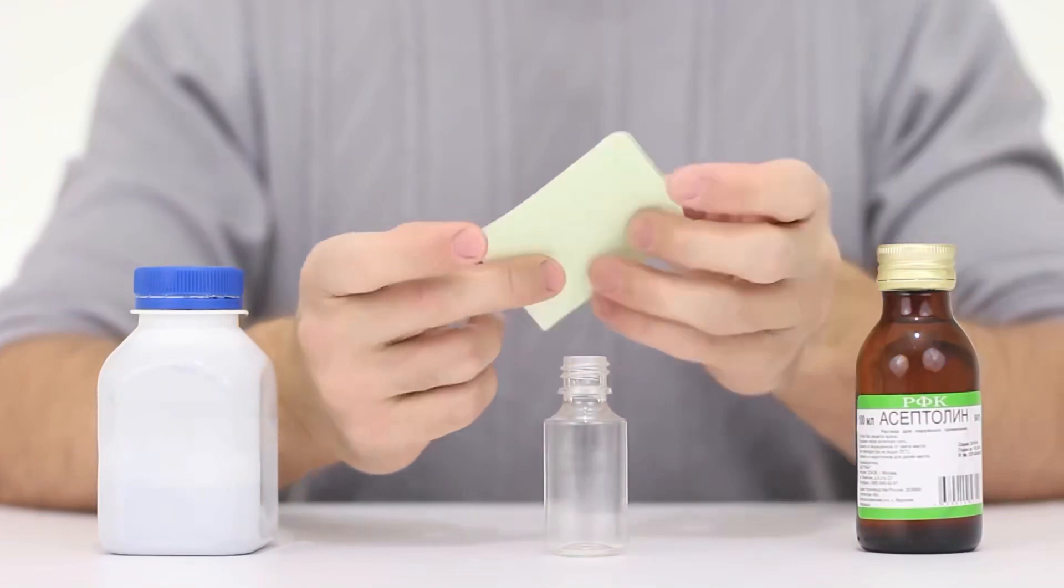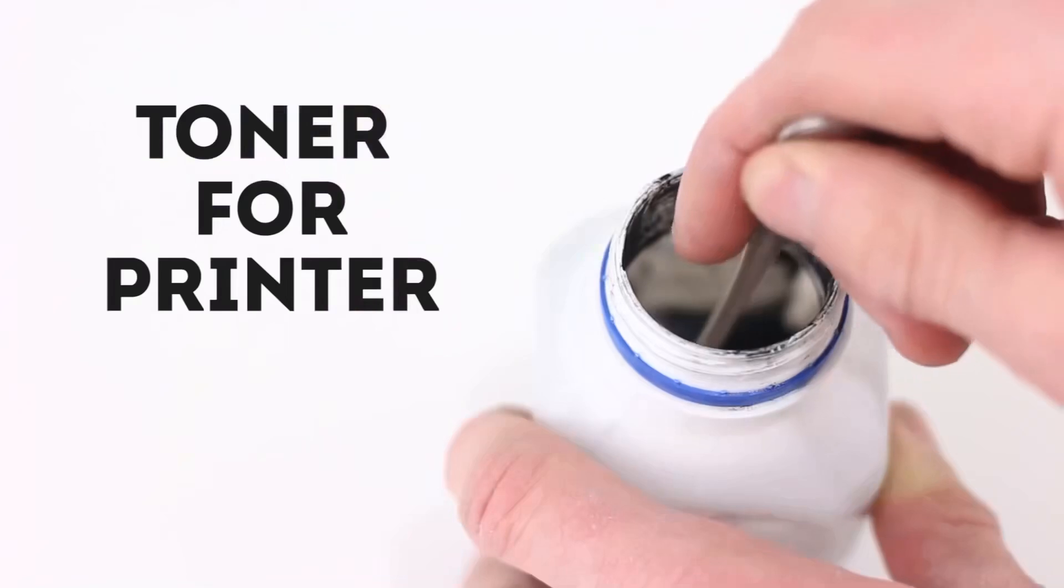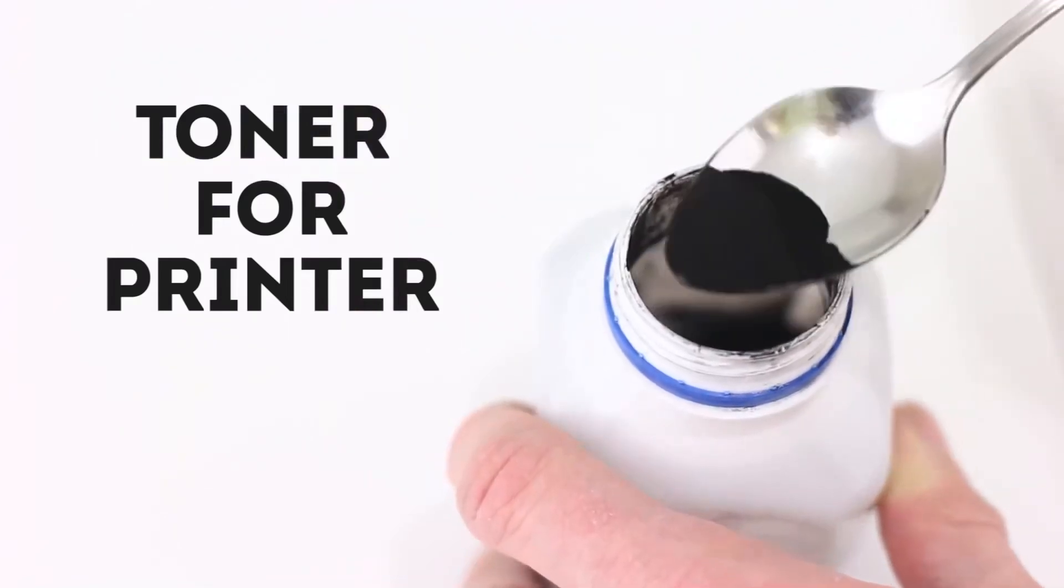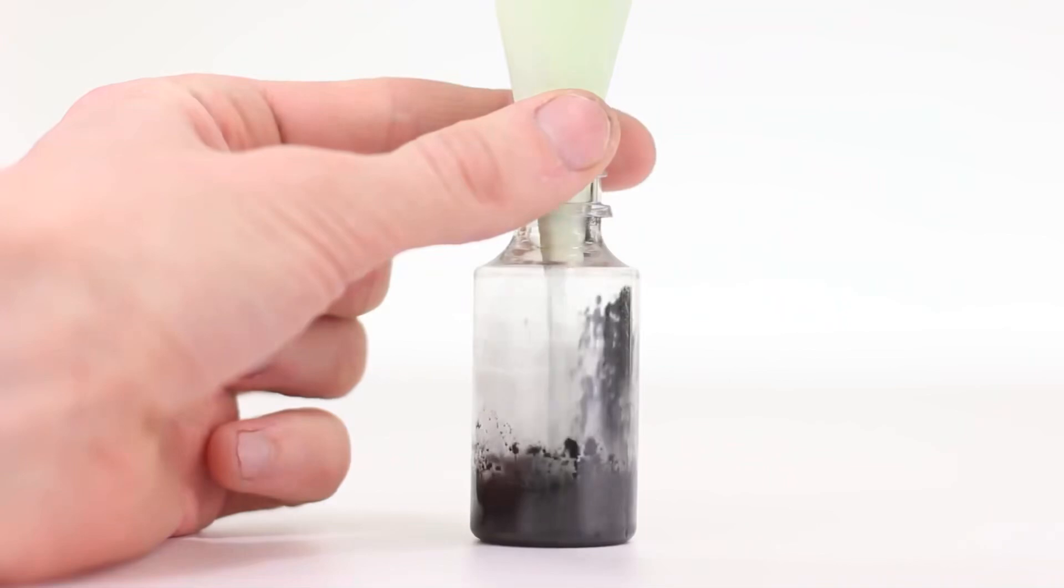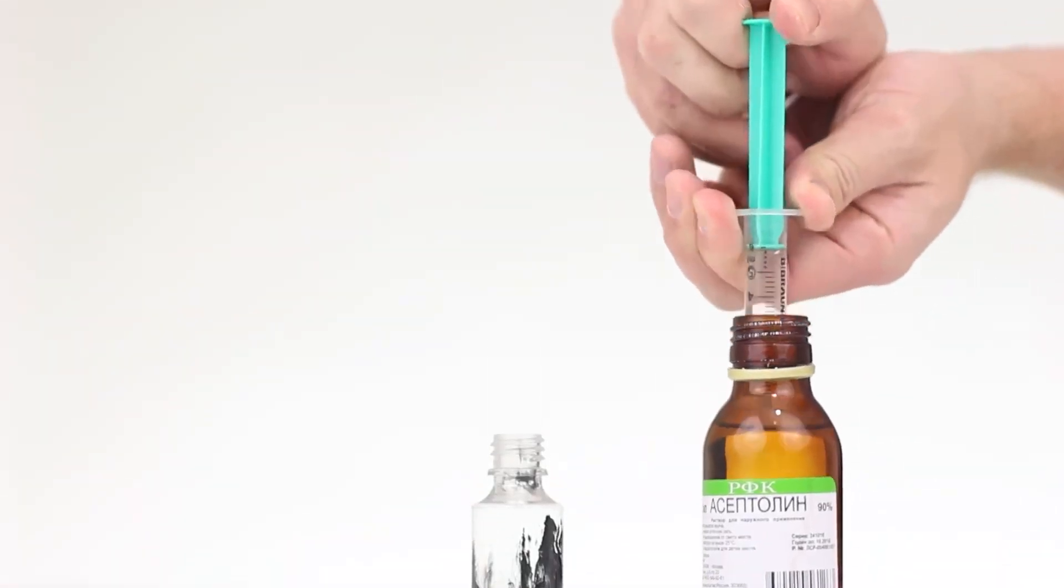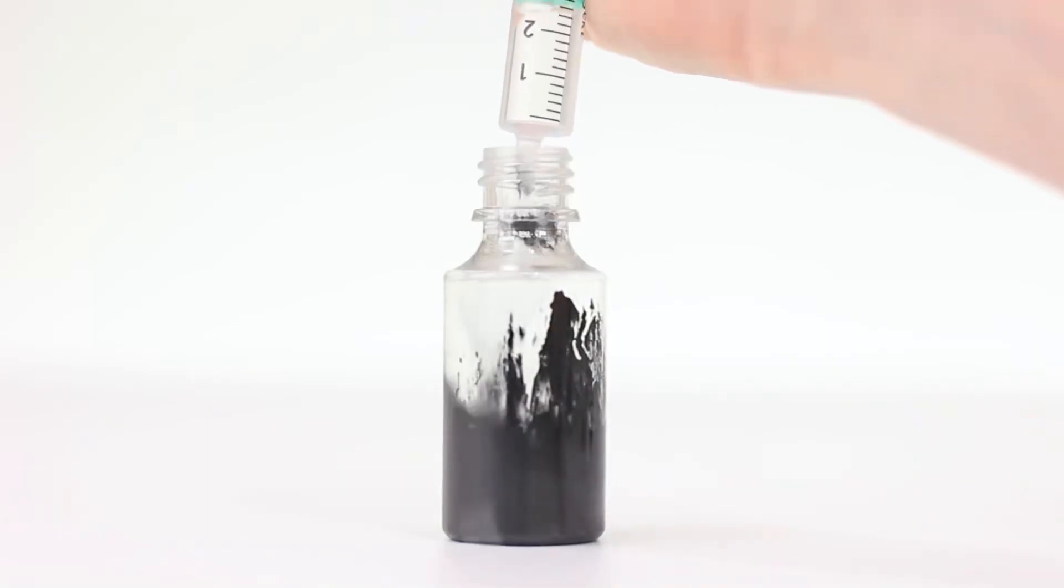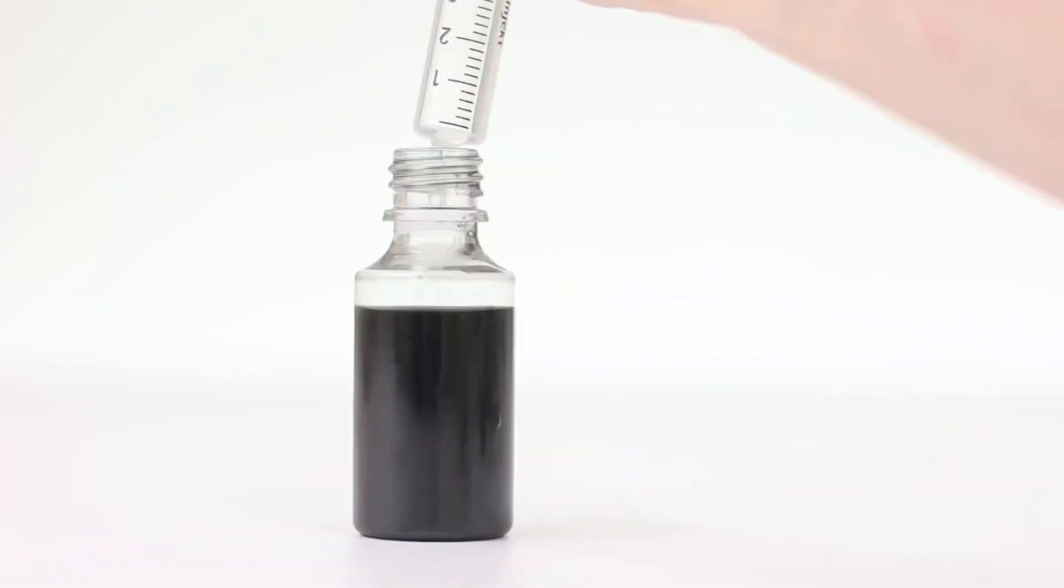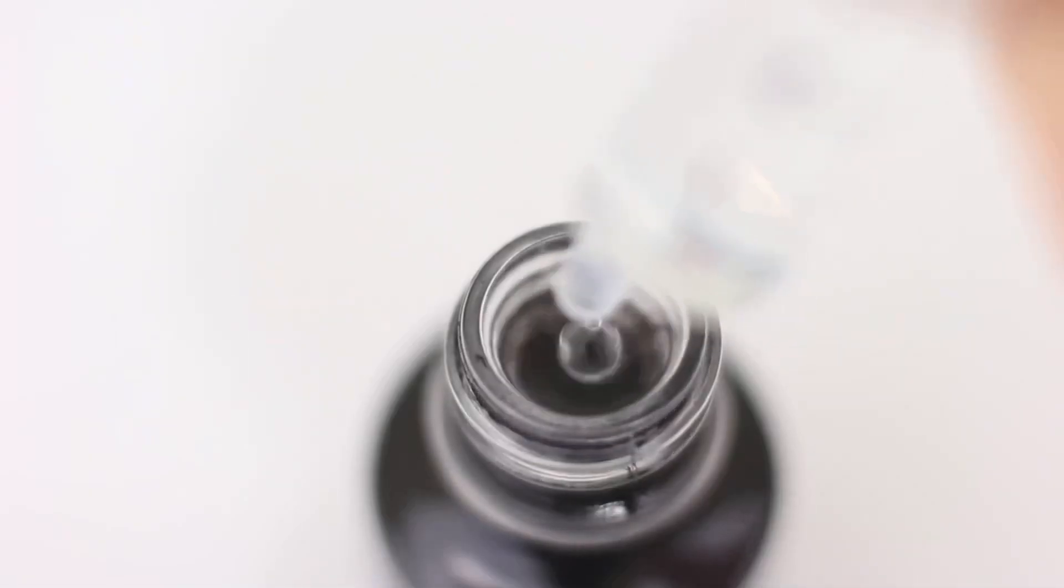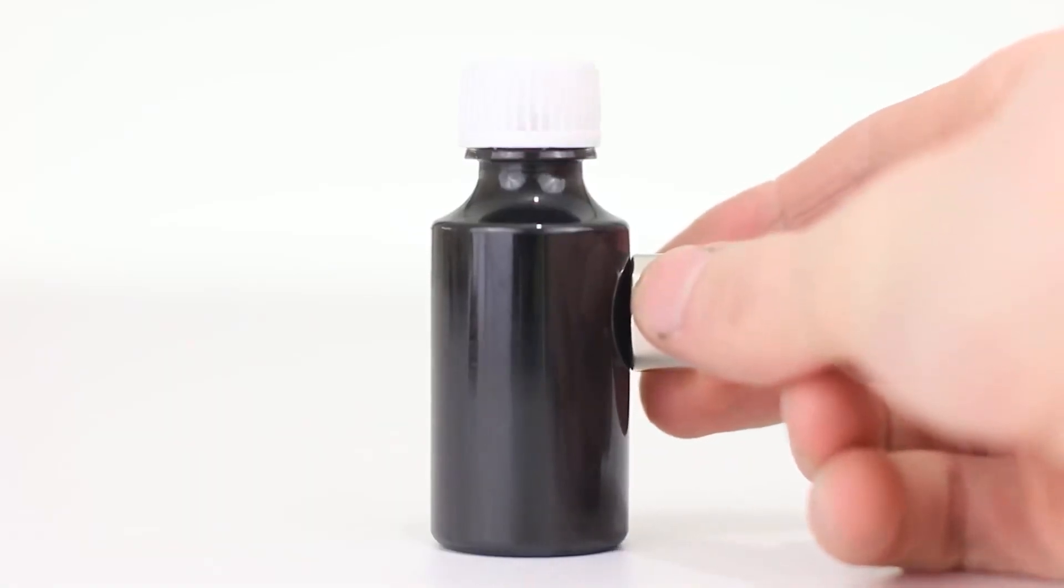Let's take a small plastic bottle. Make a funnel out of a piece of paper. And pour some printer ink inside. Using a syringe, add alcohol inside until the bottle's filled. Close the lid tightly, and now put a magnet to the walls.